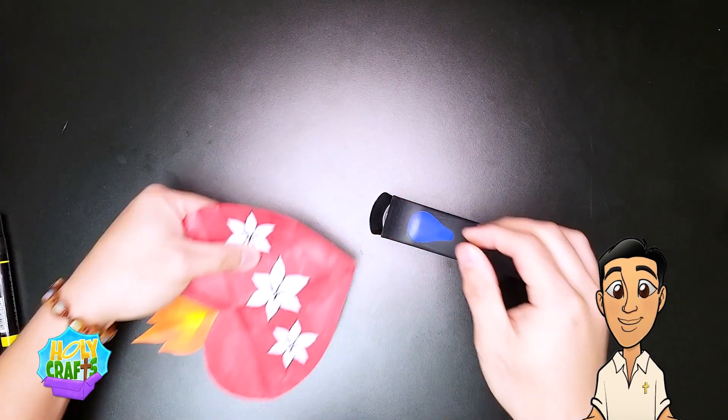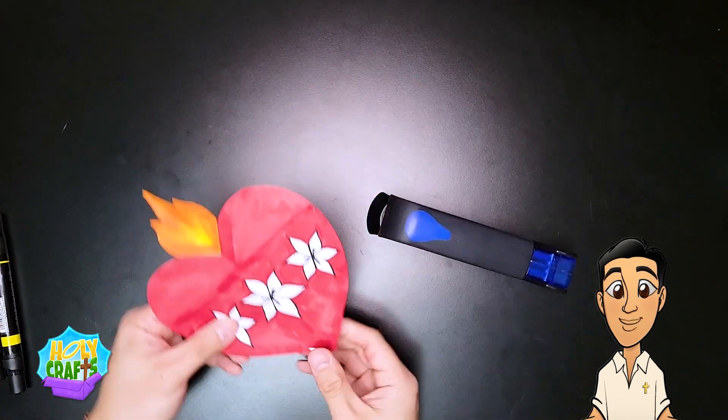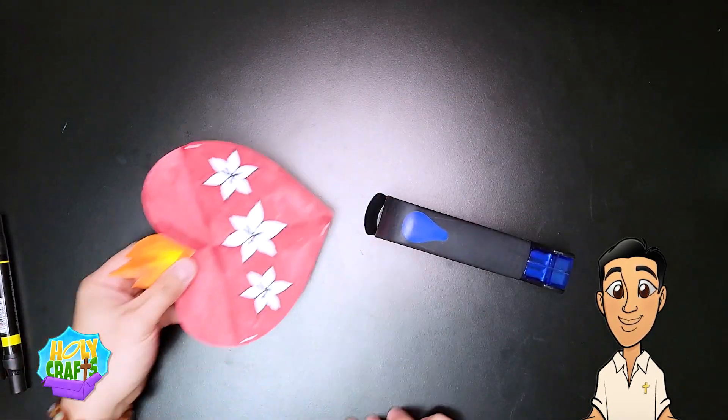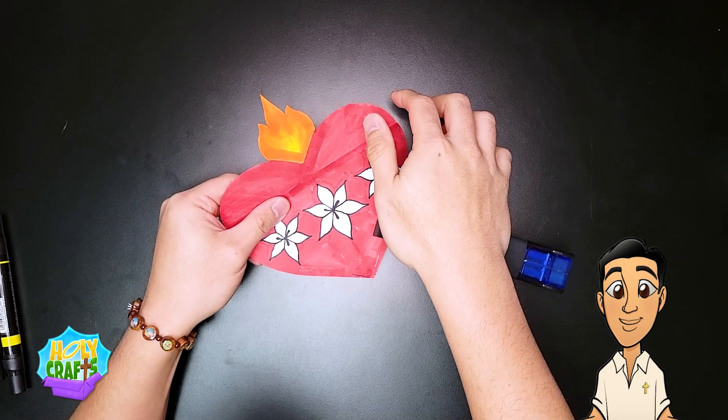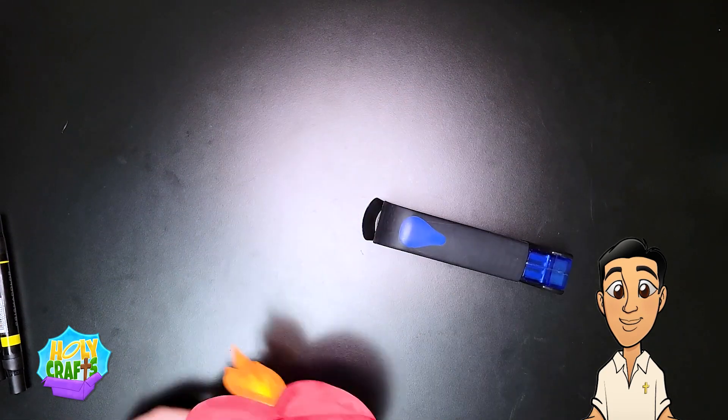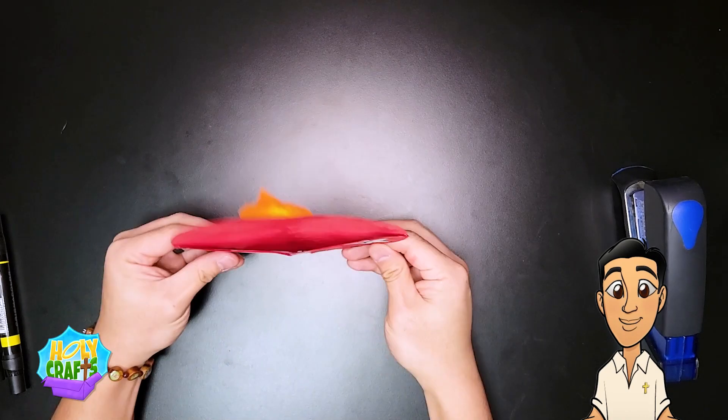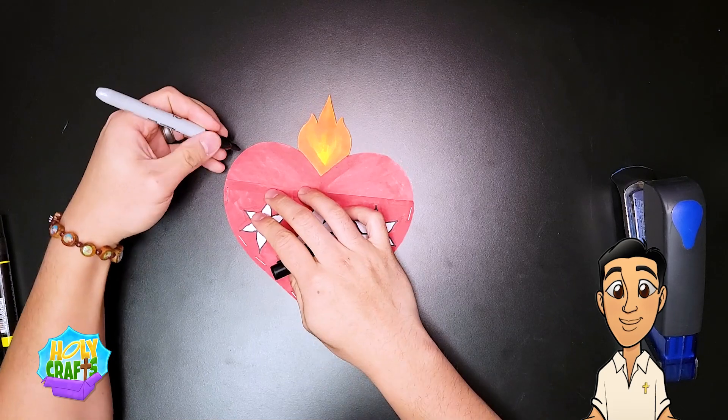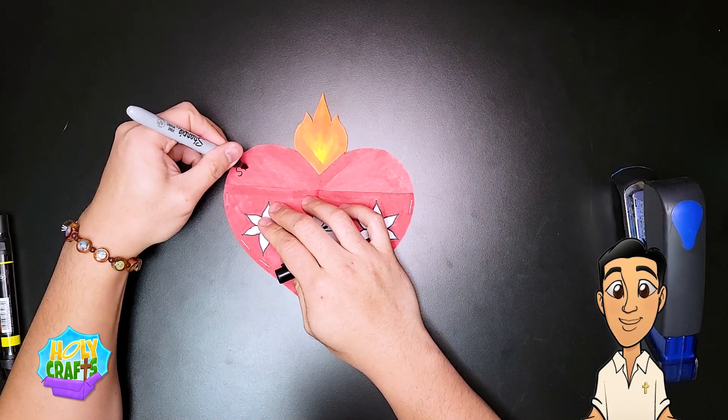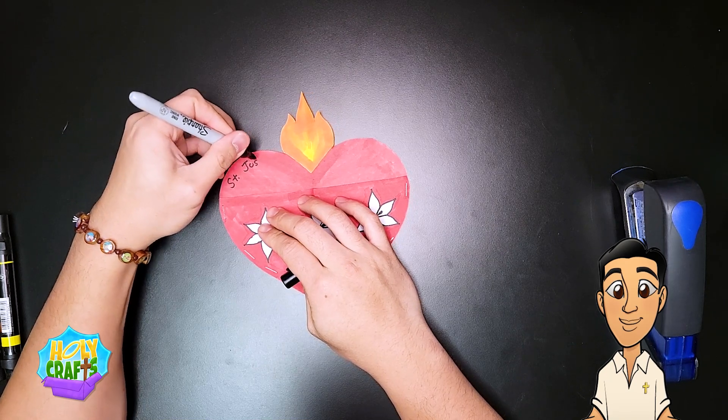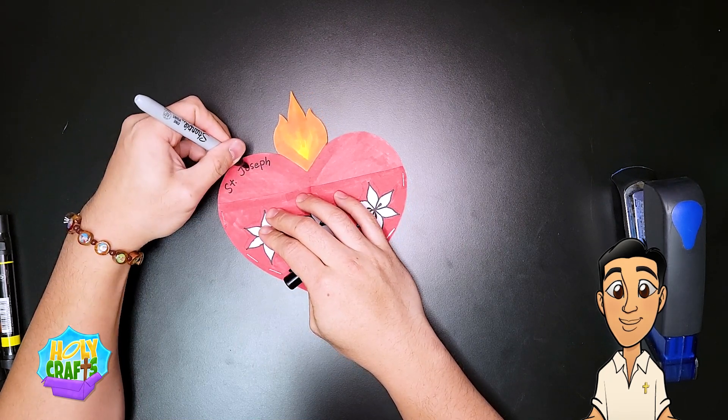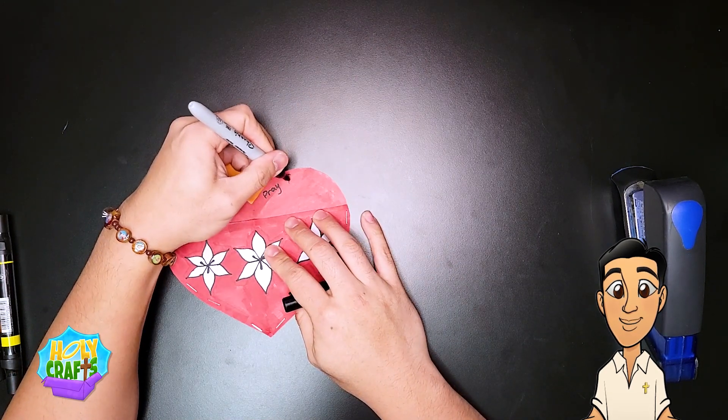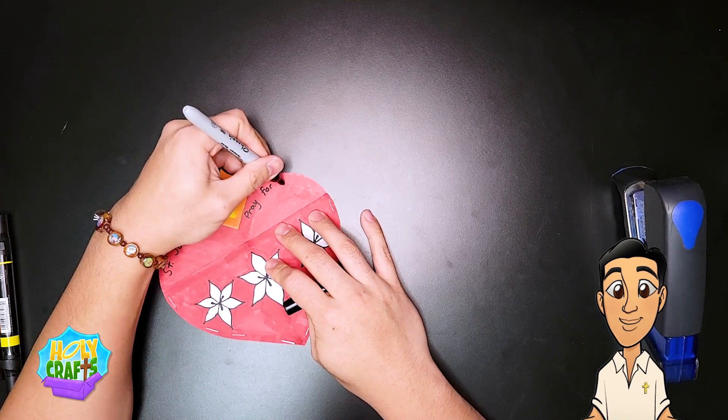All right, now that I'm all done, I'm going to take out my stapler and I'm going to staple all the edges. Once all the edges are stapled, then I'm going to take out my marker and I'm going to write St. Joseph, pray for us.